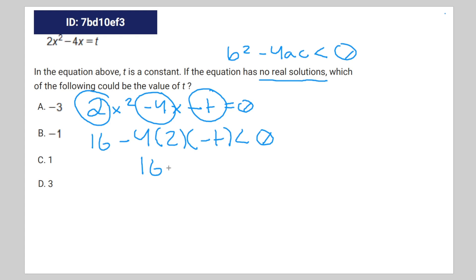That's going to be equal to 16 minus 8t, plus 8t, is less than zero. Subtract 16 from both sides, you get 8t is less than negative 16.